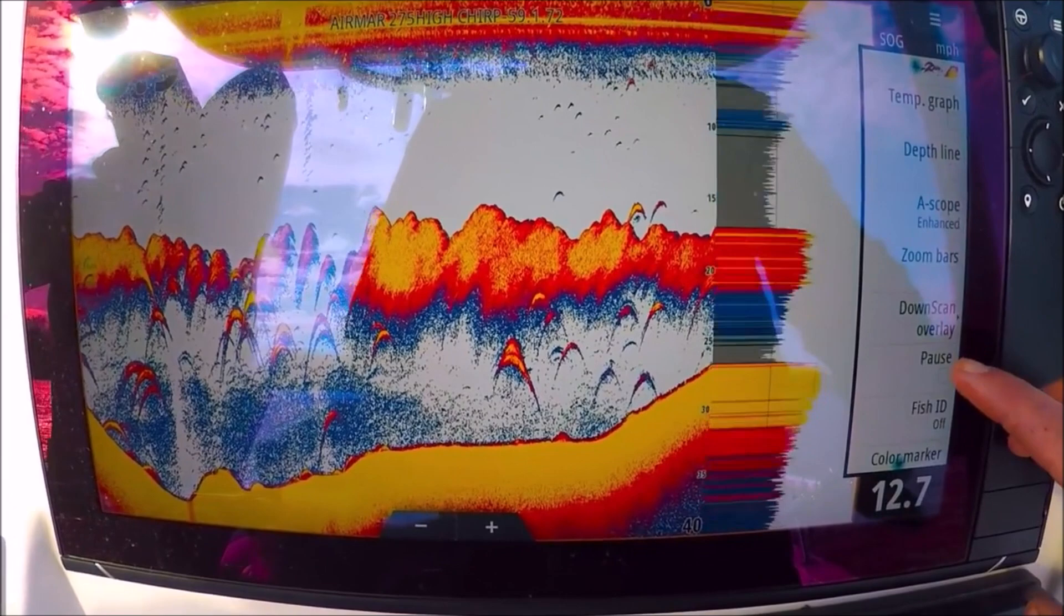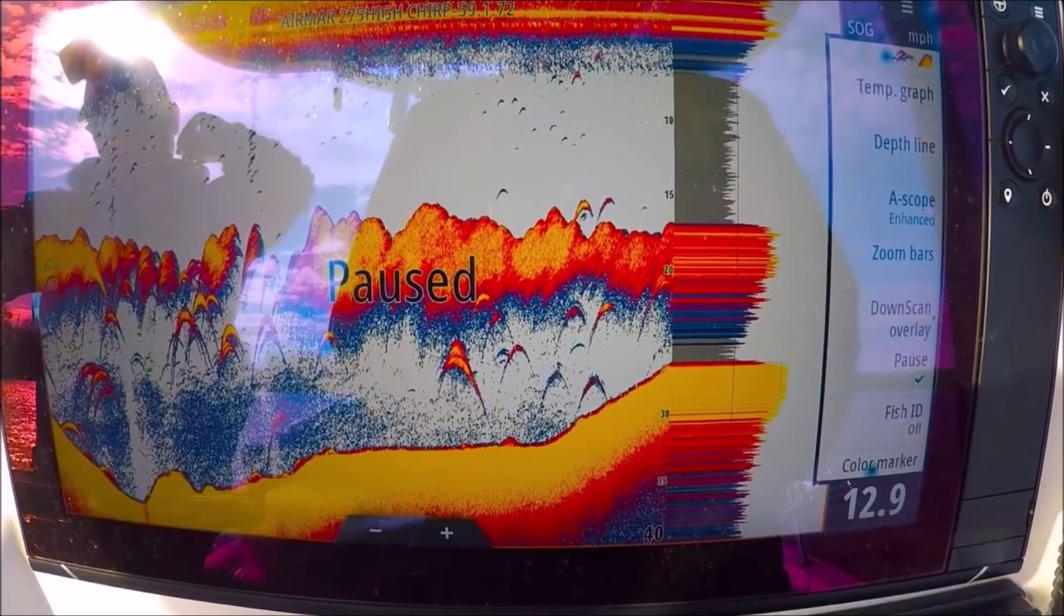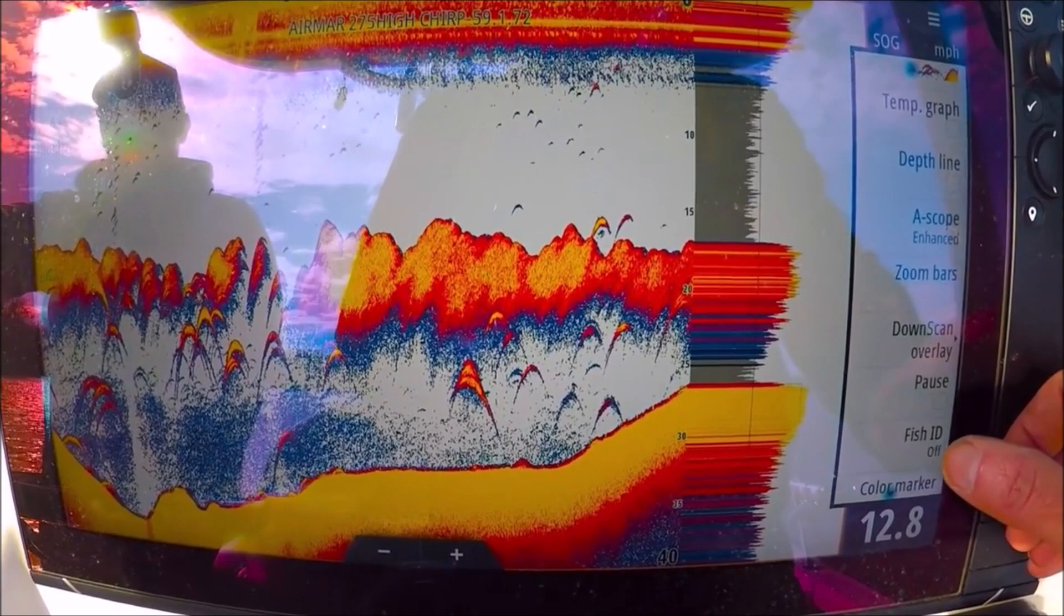Pause - this just pauses our sonar here. This is really good to do if you're going to sit in your driveway and work on your machine. If you have a chirp transducer, it's never good to run them for a long time out of the water. They can overheat and be damaged, so that's why you have that pause option.